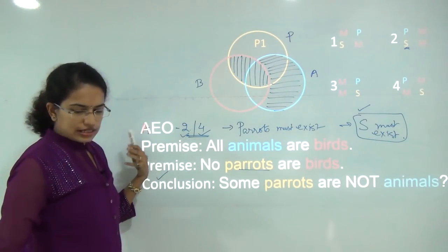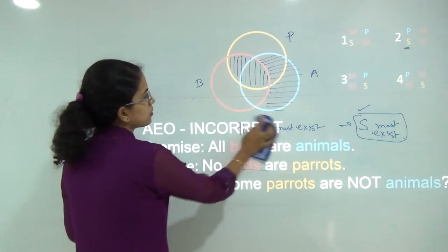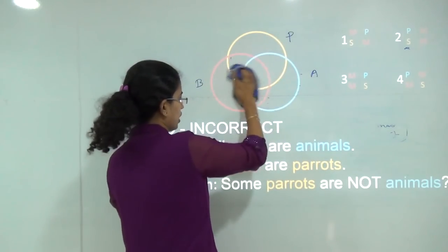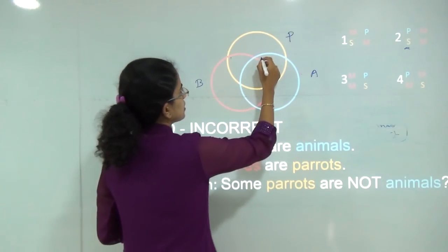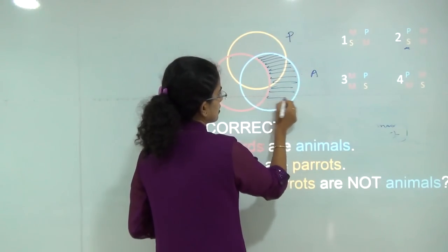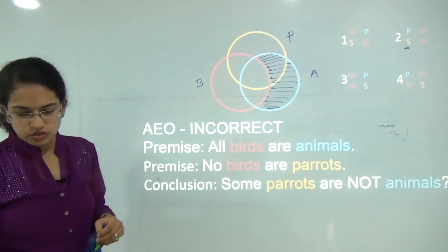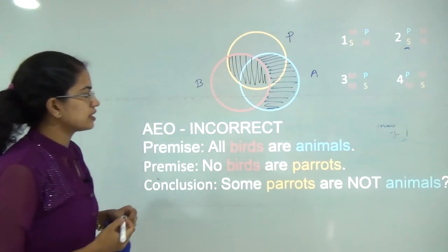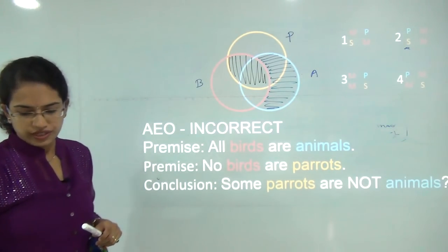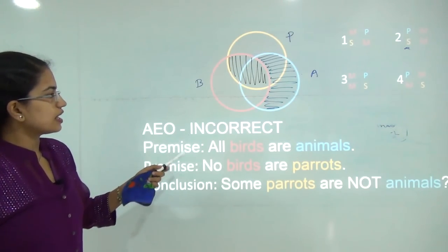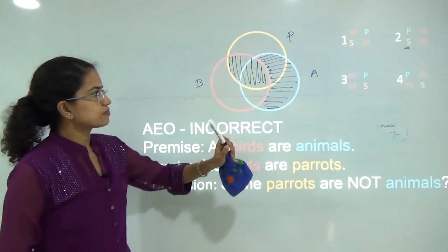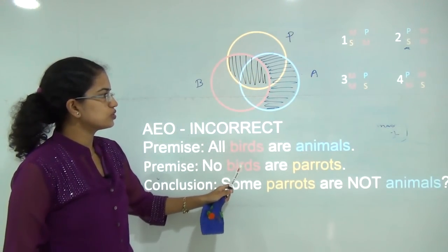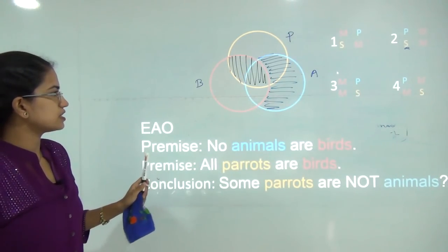Now let's look at an incorrect form of AEO — Case 3. 'All birds are animals' and 'no birds are parrots'. Then we say 'some parrots are not animals', but based on these two statements we cannot confirm whether any parrot exists outside animals or not. So this is an incorrect form of AEO.